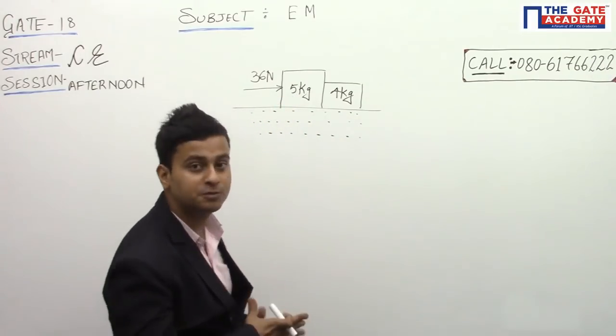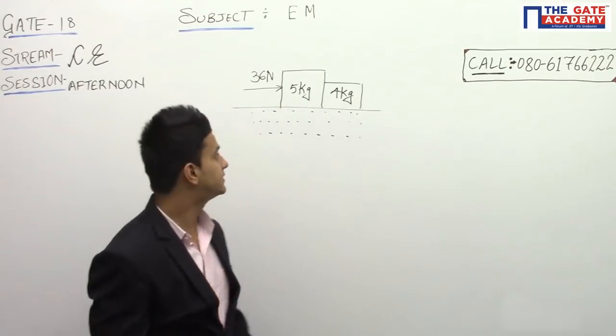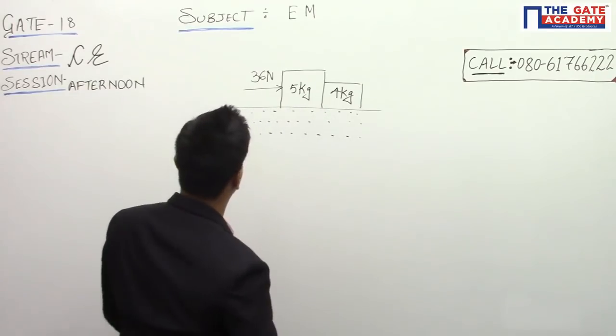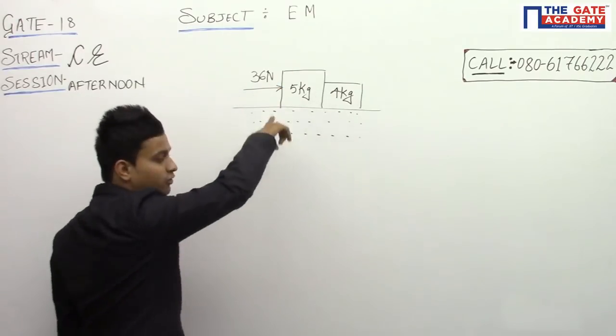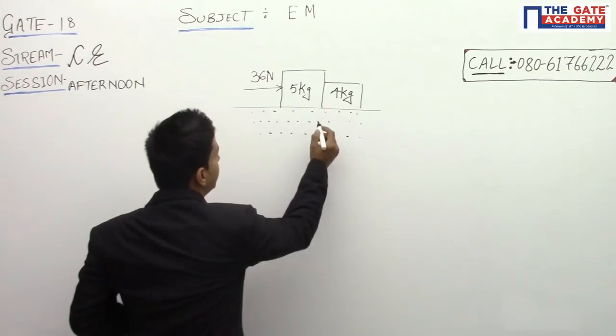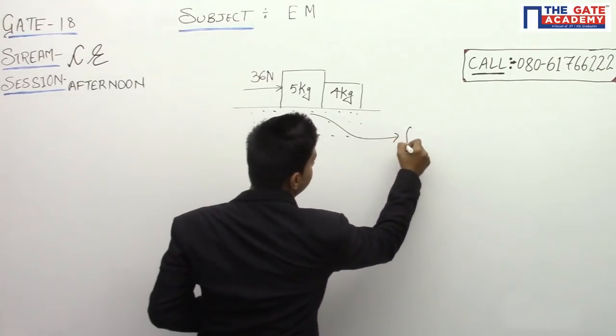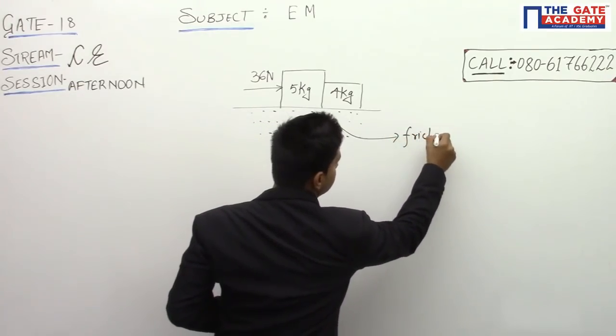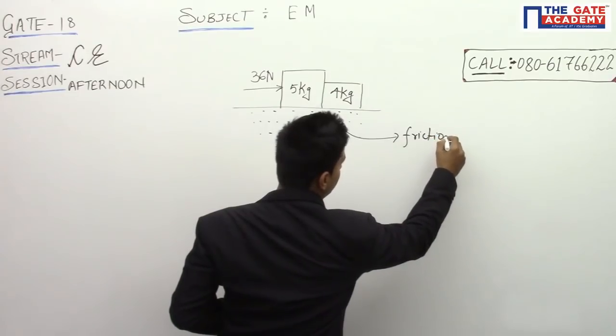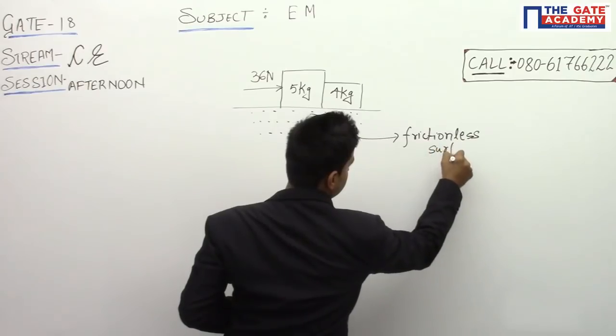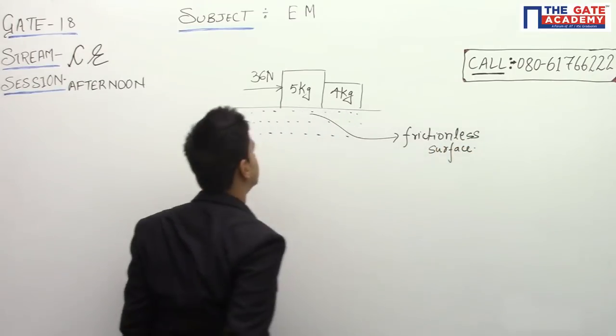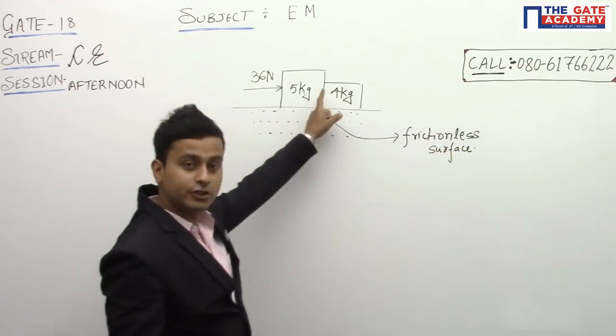This is a very easy question, actually. If you look at this system, there is only one external force acting. This is a frictionless surface, so there will be no friction force. There will be 36 Newton acting on this particular system.